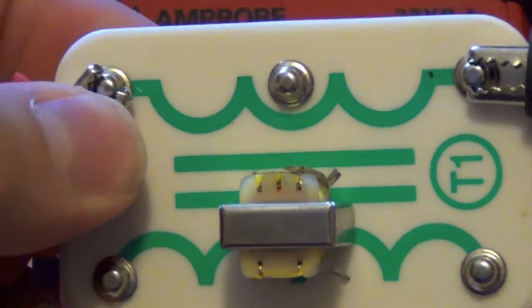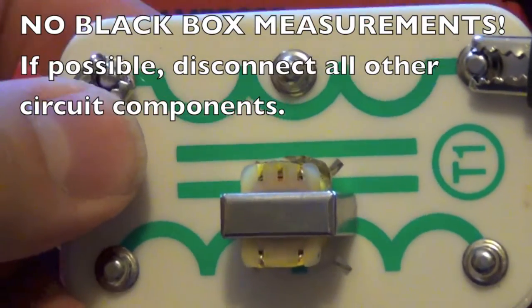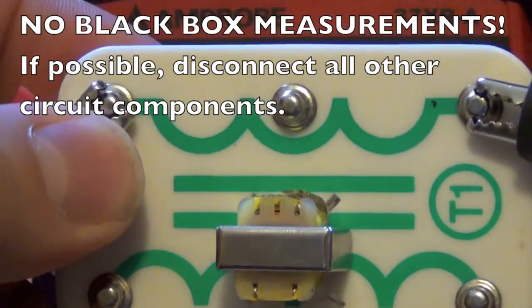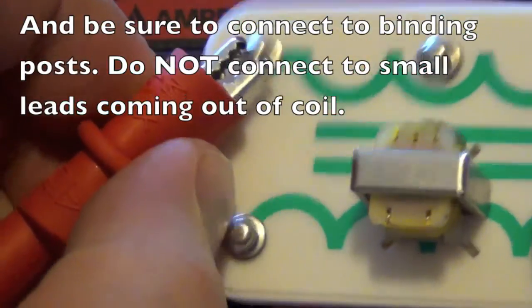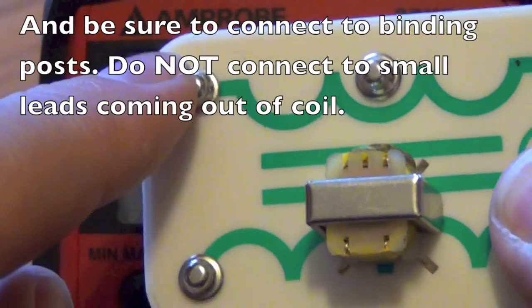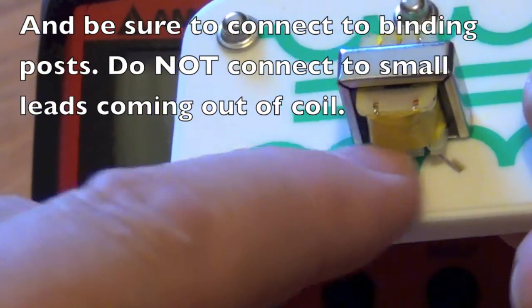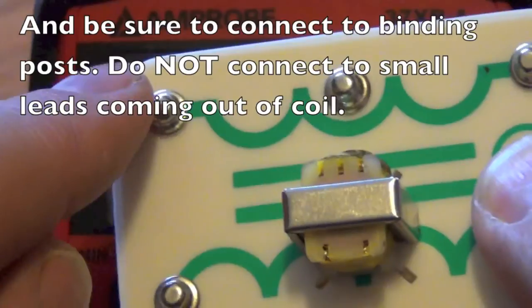When measuring a coil for inductance, make sure that your coil is not connected to other things. You don't want a black box measurement of a coil. And with the other components, make sure that you're connecting to a post and not to the actual leads on the coil. Find a nearby post.